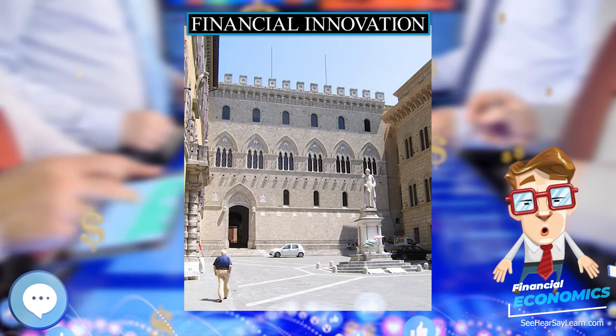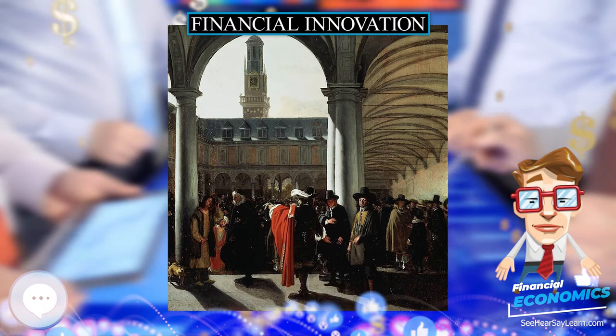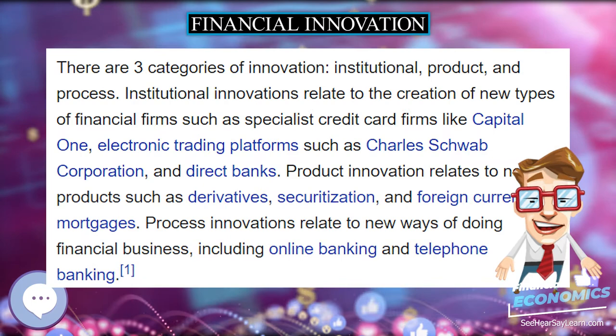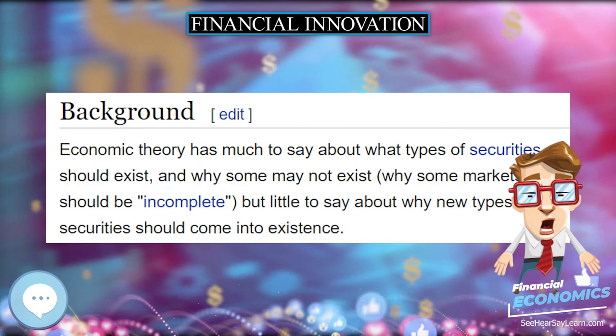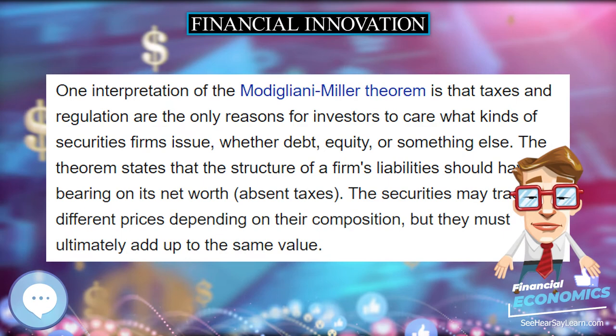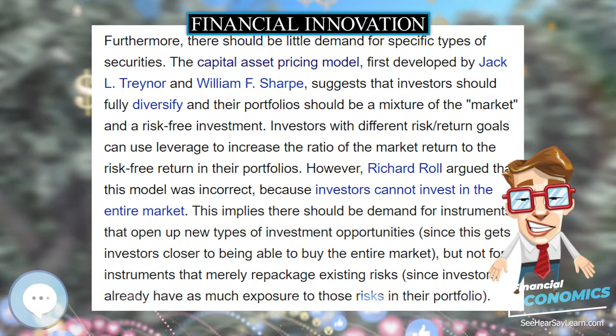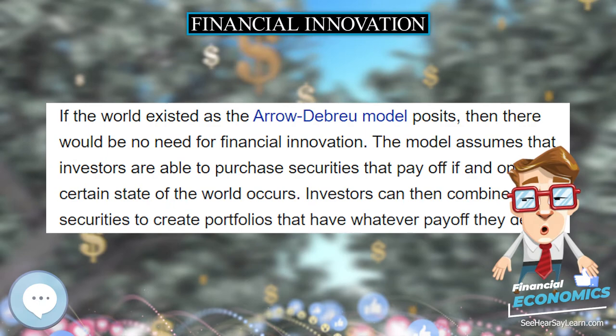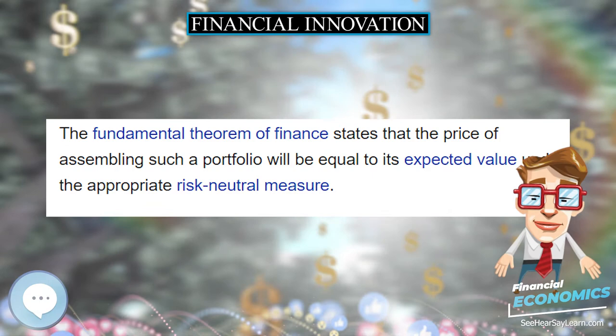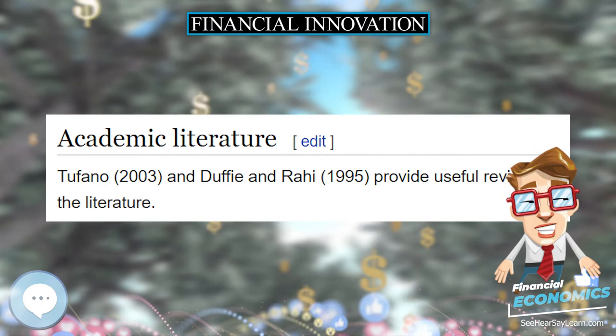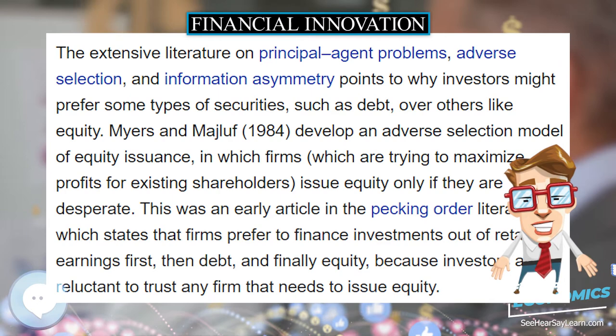Many times, regulators have explicitly discouraged or outlawed trading in certain types of financial securities. In the United States, gambling is mostly illegal, and it can be difficult to tell whether financial contracts are illegal gambling instruments or legitimate tools for investment and risk sharing. The Commodity Futures Trading Commission (CFTC) is in charge of making this determination. The difficulty that the Chicago Board of Trade faced in attempting to trade futures on stocks and stock indexes is described in Melamed (1996). In the United States, Regulation Q drove several types of financial innovation to get around its interest rate ceilings, including euro-dollars and NOW accounts.